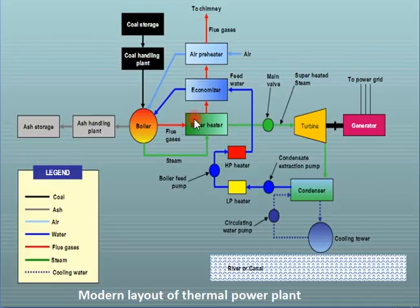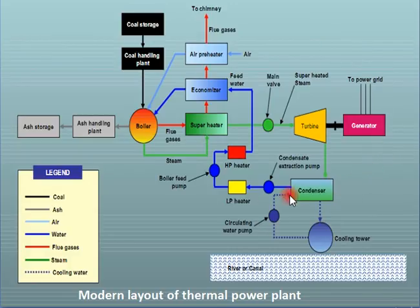This is all about the flue gases and air circuit. The modern thermal power plant has many components, but we can understand it easily with the help of the key components we have discussed. This concludes the overview of the modern thermal power plant.